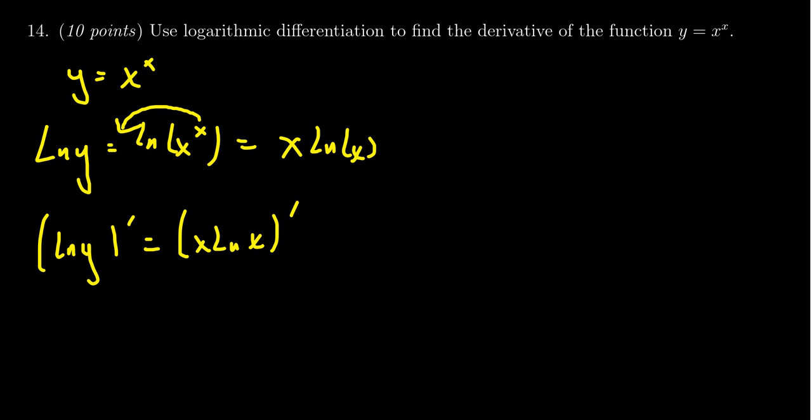Because when you take the derivative on the left-hand side, you're going to get y prime over y. The nice thing about logarithmic differentiation, if you have an explicit function relationship like you do here, then the left-hand side, when you take the derivative, will always look like y prime over y. The right-hand side will depend on the function itself.